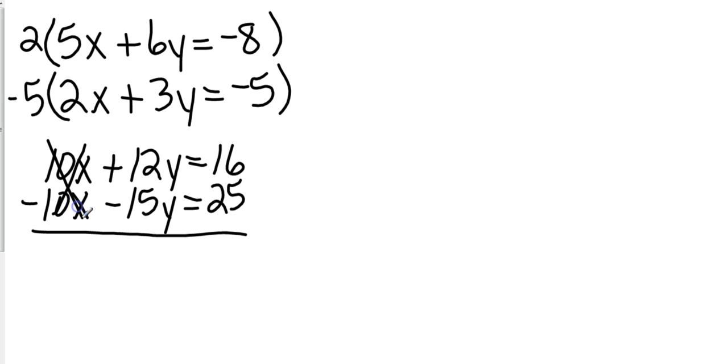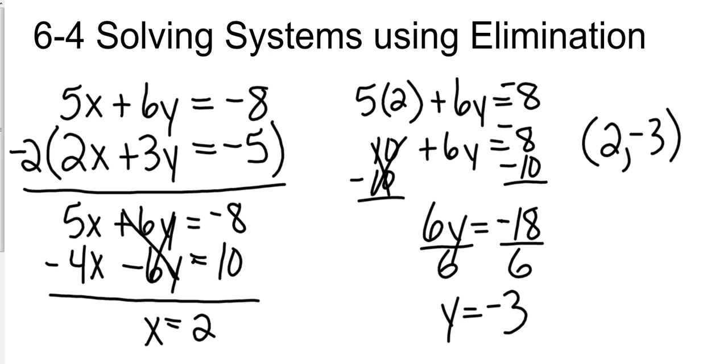That cancels. 12y minus 15y is negative 3y. Negative 16 plus 25 is going to be positive 9. And when we divide both sides by negative 3, that gives us a y value of negative 3. So if we go back to our original problem, our y value was negative 3.